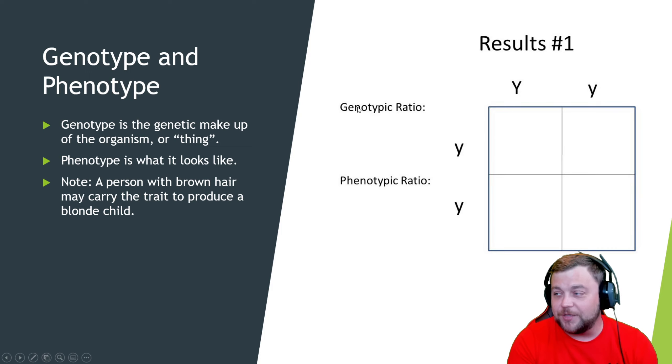Genotype - they might ask you or they will ask you the genotype or genotypic ratio. That is the genetic makeup of the organism or thing. That is the actual letters, the ratios of them to other ones. If you only have one out of these four squares that has two lowercase y's, well that's one to four, one out of four. Your ratio.